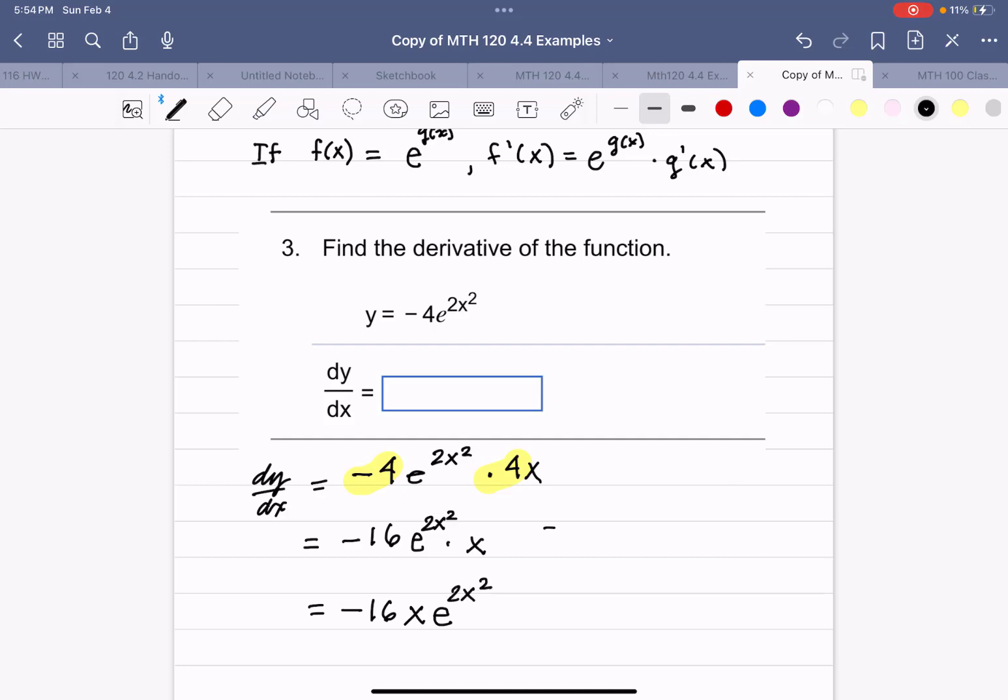Now either one of these is fine, this last one being a little bit better, but they're equivalent, so either answer is correct. But you do want to simplify by multiplying those constants.